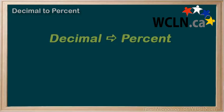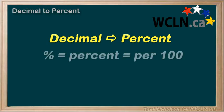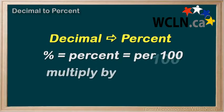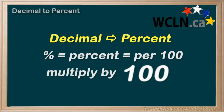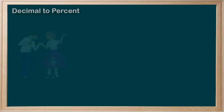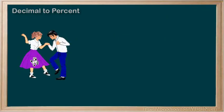Change a decimal to a percent. To change a decimal to a percent, remember: percent means per 100. Multiply the decimal by 100. This is the same as moving the decimal point two spaces to the right. I call this the percent POCA — move two to the right.